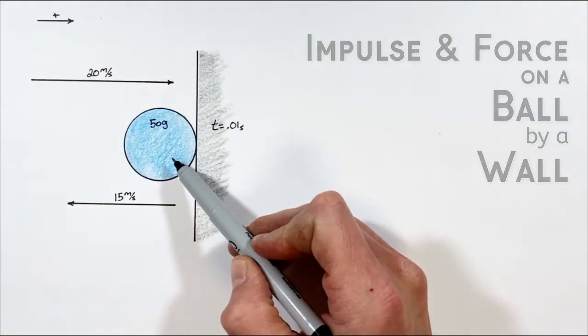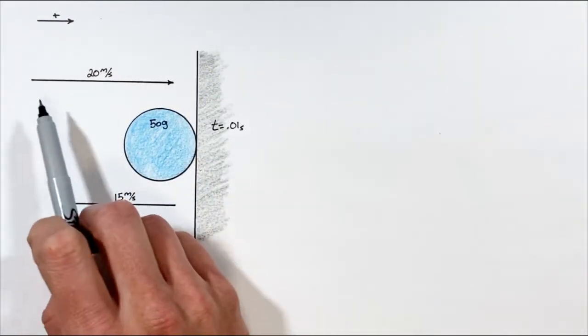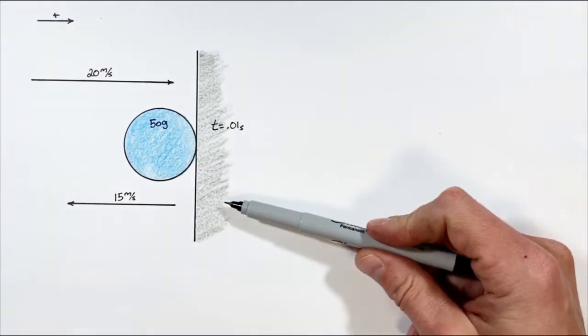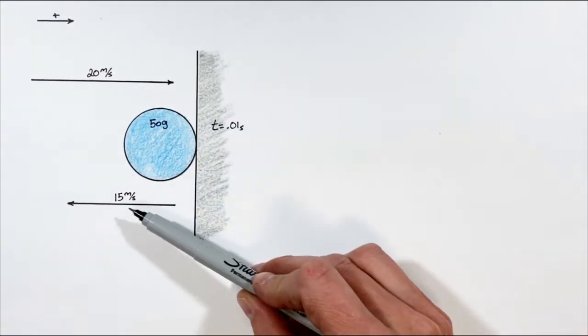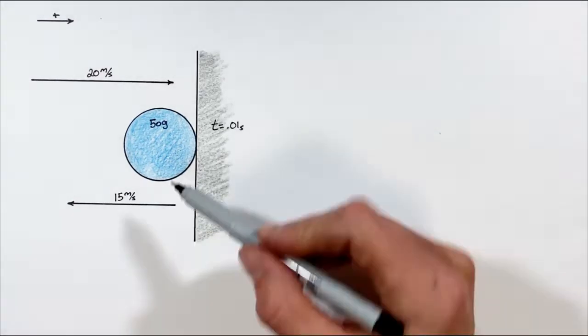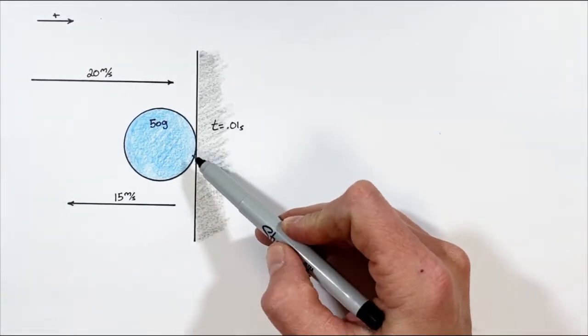Today we're going to look at a situation where we have a 50-gram bouncy ball traveling at 20 meters per second towards a wall. Once the ball strikes the wall, it bounces back at 15 meters per second. In this problem we're going to solve for two things: